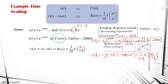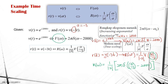For time scaling with a = -3: r(t) = v(-3t), so R(omega) = (1/|a|) * V(omega/a) = (1/3) * V(omega/(-3)). Substituting V(omega) = 2*pi*delta(omega - 2000) into R(omega): R(omega) = (1/3) * 2*pi*delta(omega/(-3) - 2000). Notice that all omega is divided by -3, giving omega/(-3) - 2000. Simplify to get the final Fourier transform of r(t).